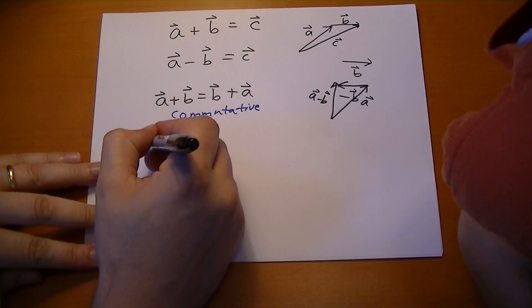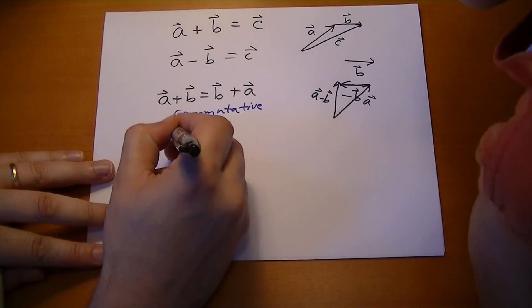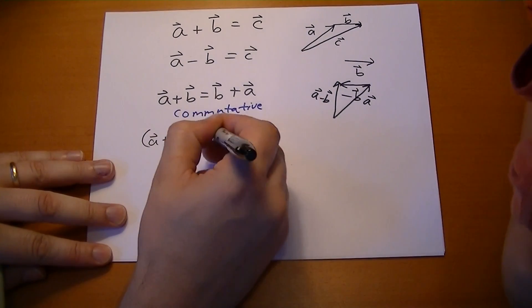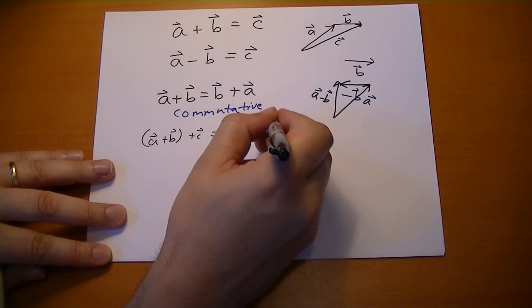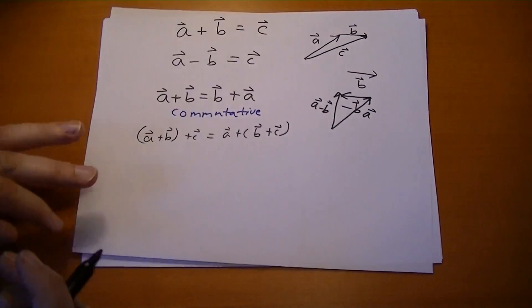Adding vectors is also associative. So A vector plus B vector, and that plus C vector, is the same as A vector plus B vector plus C vector. So it's associative.